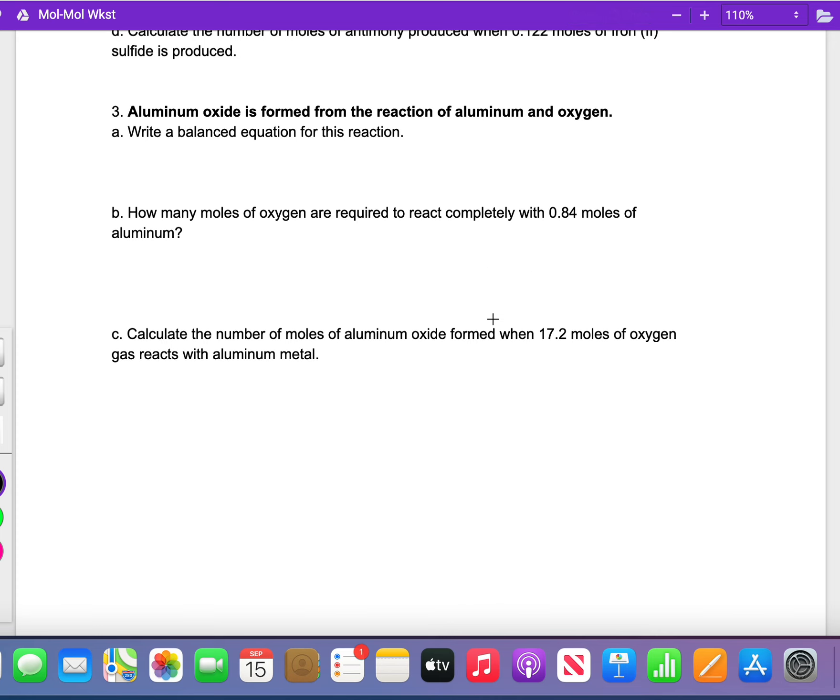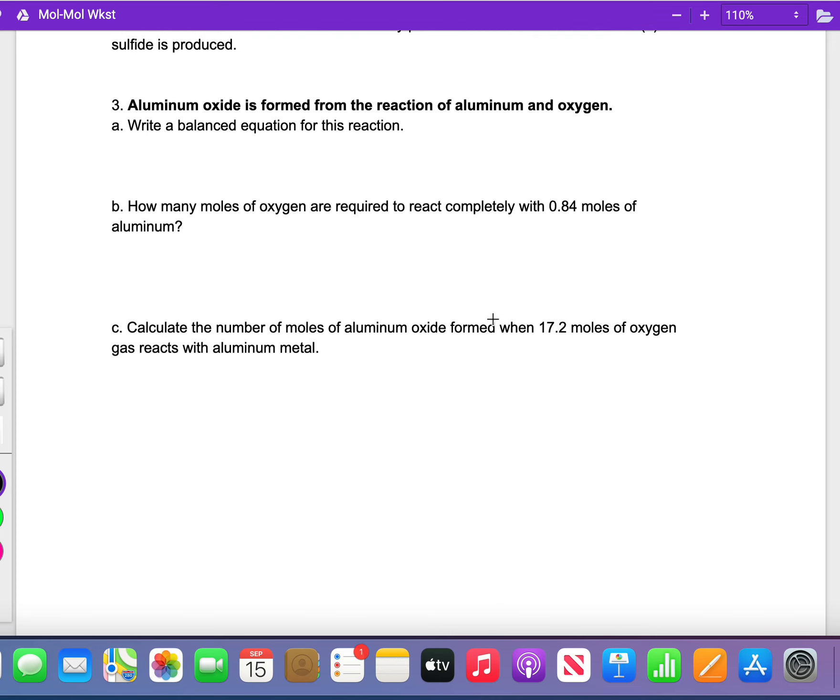Now I'm going to help you start this equation, but you can do B and C. Aluminum oxide is formed from the reaction of aluminum, so we take aluminum plus oxygen. It's supposed to be oxygen gas, so it'd be O2. Then you would get aluminum oxide, which is Al3+ and oxygen is 2-, so it's Al2O3. I'll let you figure out how to balance that one.